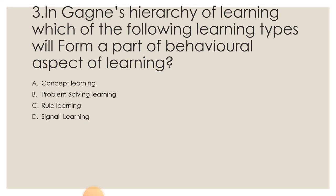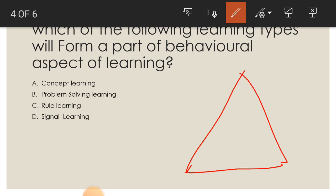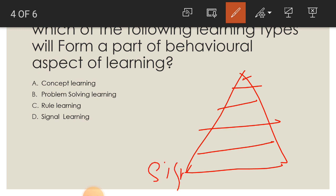For Question 3, in Gagné's hierarchy of learning, there are eight levels: signal learning, stimulus-response (SR) learning, chaining, verbal association, discrimination learning, concept learning, rule learning, and problem solving. As we move upward in the hierarchy, complexity increases.